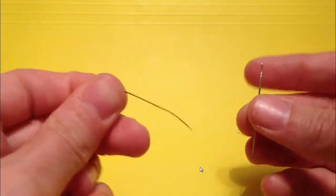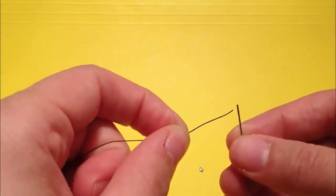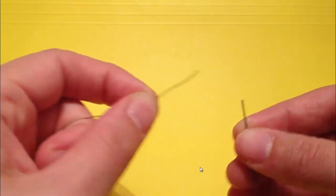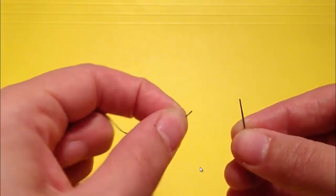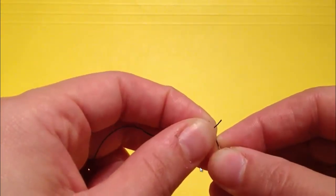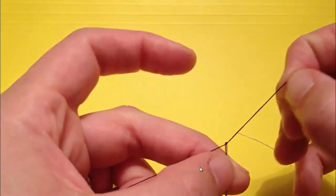The biggest mistake I see people make when trying to thread a needle is having too much thread in their hands. See how if you have a long line of thread there, it'll just bend? What you need to do is pull it so you only have a little bit sticking up from your finger and your thumb there. And then just slide the eye of the needle right on it and pull the thread through.